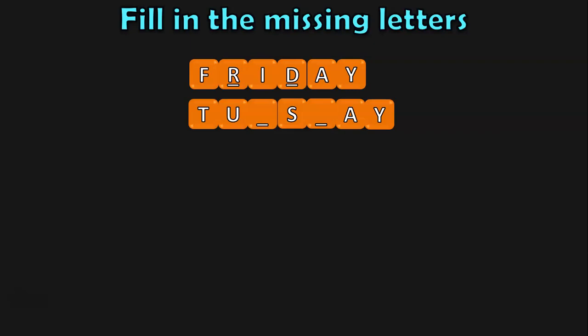Next, T, U, blank, S, blank, A, Y — this is a name of a day in a week. The answer is Tuesday. Children tend to get confused with the spelling of Tuesday and Thursday, so you can test their learning by such methods. The missing letters spell T, U, E, S, D, A, Y — Tuesday.